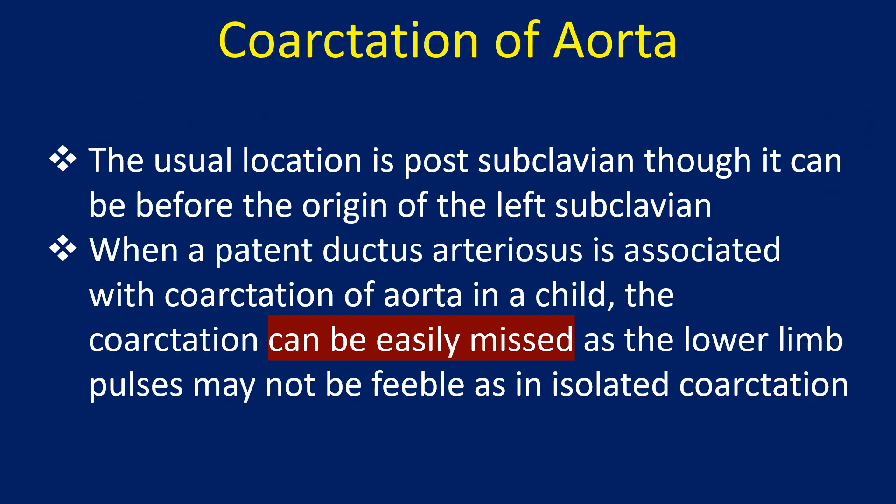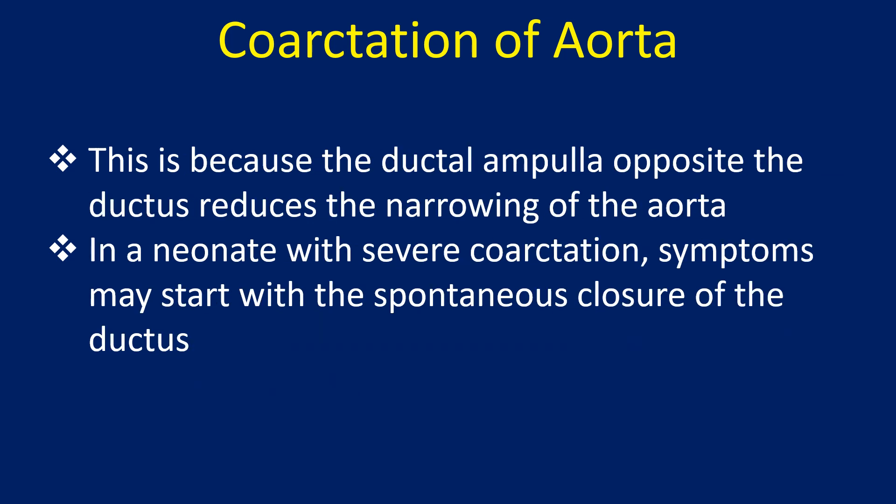The usual location is post-subclavian, though it can be before the origin of the left subclavian. When a patent ductus arteriosus is associated with coarctation of aorta in a child, the coarctation can be easily missed as the lower limb pulses may not be feeble as in isolated coarctation. This is because the ductal ampulla opposite the ductus reduces the narrowing of the aorta.